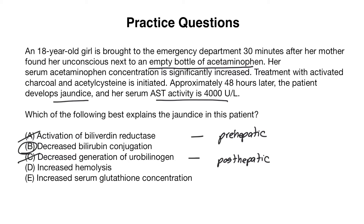Answer choice D is increased hemolysis. This would be incorrect because we know that there is acute liver damage rather than acute hemolytic anemia in this case. So this is also incorrect because it is referring to a pre-hepatic cause as well.